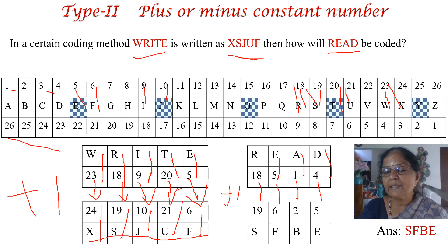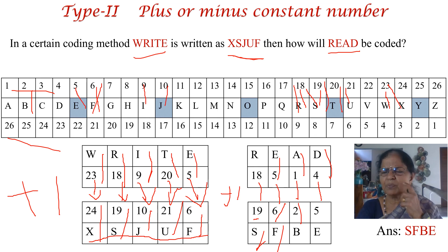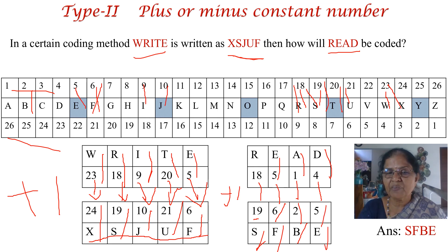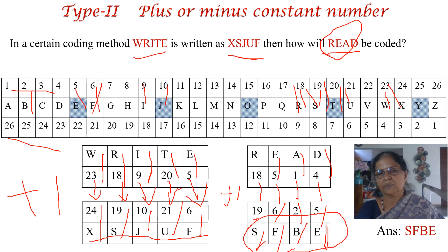Look up the corresponding letters for these numbers in the direct order table: 19 is S, 6 is F, 2 is B, 5 is E. So the word 'read' will be coded as S-F-B-E. The answer is SFBE.